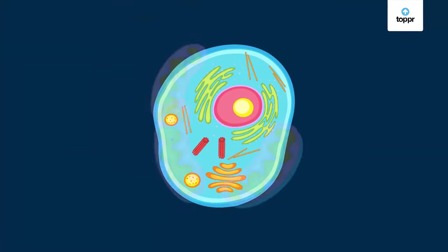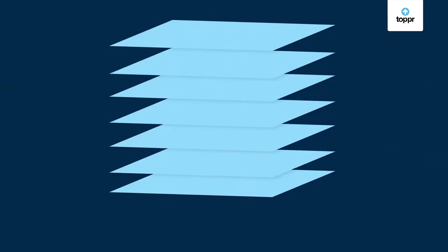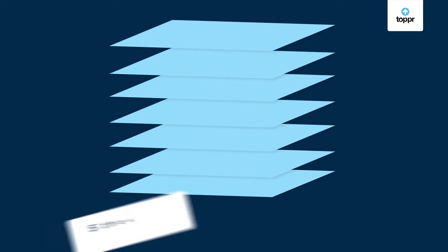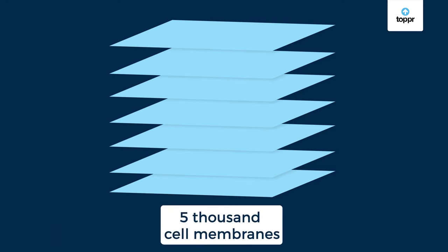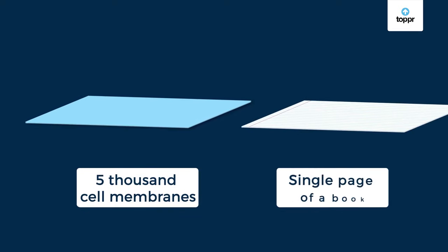I have covered many functions of the protector of the cell. But despite carrying out so many functions, it looks quite humble. For instance, if we look at the thickness of the plasma membrane, it's very very thin. To give you an idea of exactly how thin it is, it would require about 5000 membranes stacked one on top of the other to equal the thickness of a single page of your book.